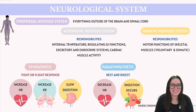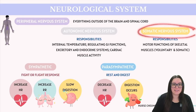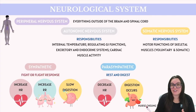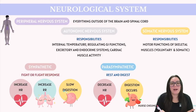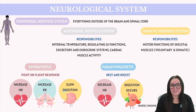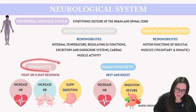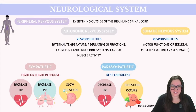Now let's cover the peripheral nervous system. Functionally, the PNS is divided into two main parts: the somatic nervous system and the autonomic nervous system. The somatic nervous system is primarily responsible for motor functions of skeletal muscles, encompassing both voluntary actions under conscious control and somatic reflexes which are not. The autonomic nervous system manages the body's internal environment, regulating gastrointestinal, excretory, and endocrine systems, as well as smooth and cardiac muscle activity and autonomic reflexes. The autonomic nervous system is further divided into the sympathetic and parasympathetic nervous systems.